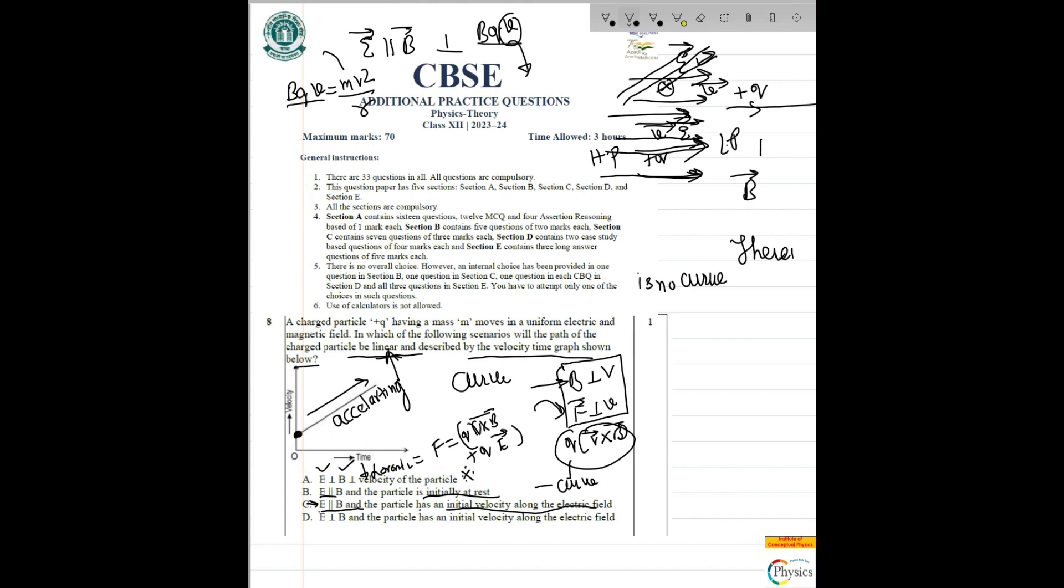E and B are parallel. The velocity, if you notice, E is parallel to V and E is also parallel to B. That means V is parallel to B, which means no circular motion will happen here.